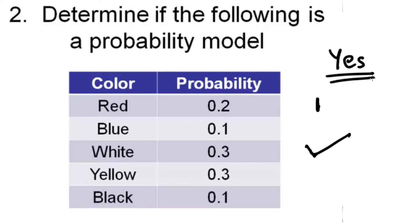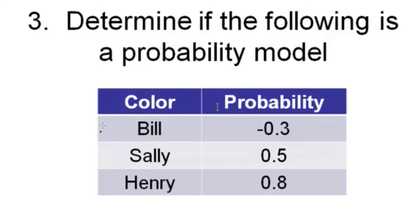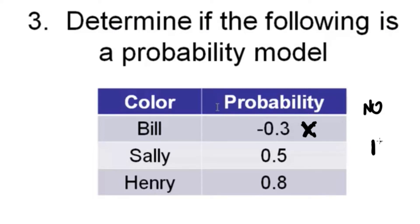Now let's determine if the next one is a probability model. The values are negative 0.3, plus 0.5, plus 0.8, which sum to one. However, this is not a probability model because we have a negative value. Even if the sum is one, it is not valid because probability values cannot be negative. So the answer is no.